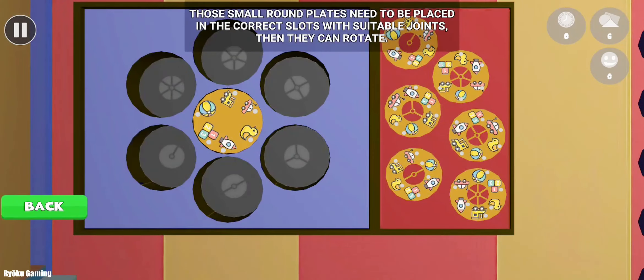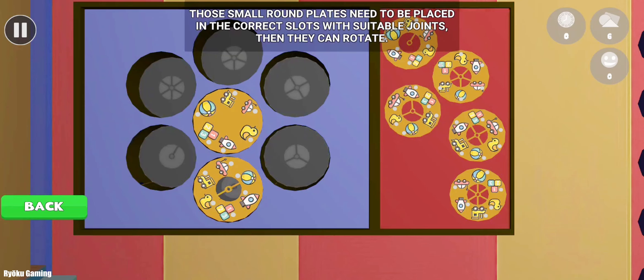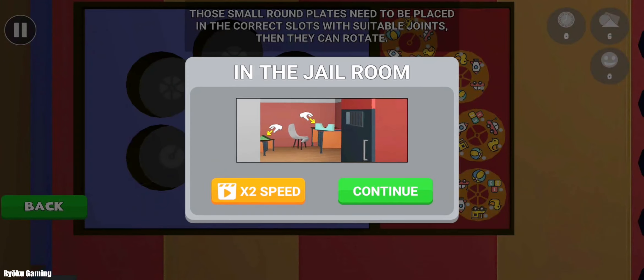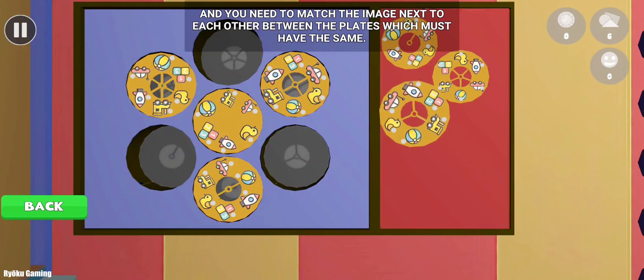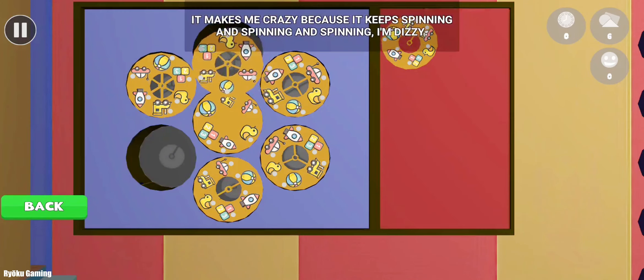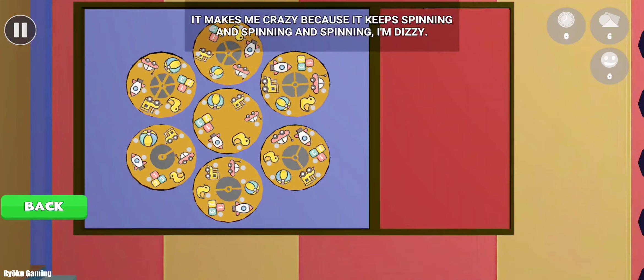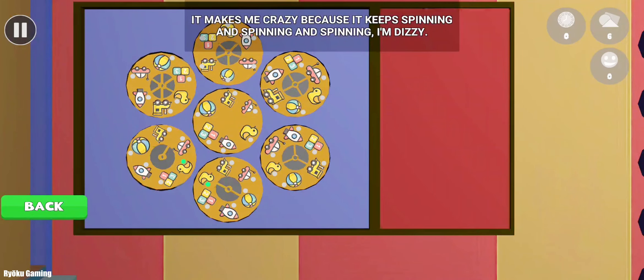Those small round plates need to be placed in the correct slots with suitable joints and they can rotate. You need to match the image next to each other between the plates which must have the same. It makes me crazy because it keeps spinning and spinning.